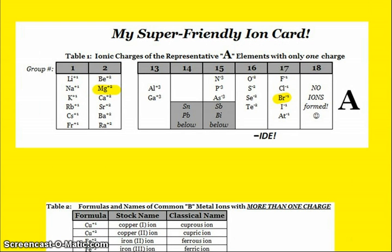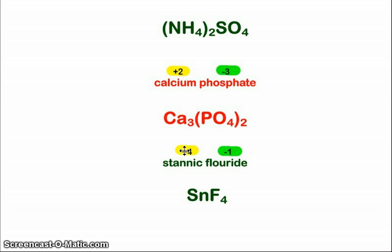Fluoride, of course, is up at the top. Fluoride, F minus one. And so I will need one of my tins and four of the fluorides to make sure that I have a net ionic charge of zero.